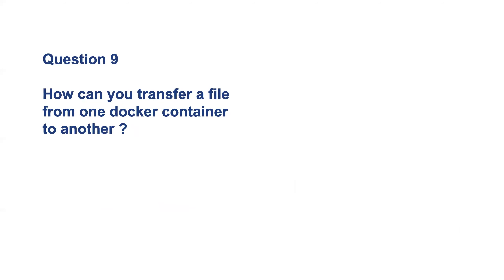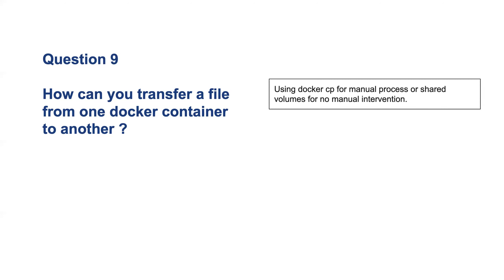Question nine: how can you transfer a file from one container to another? For example, you have a login container and a payments container, and you want to pass information from login to payments. One option is docker cp — a manual two-step process where you copy the file from the source container to your host, then copy it from the host to the destination container.